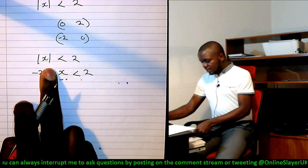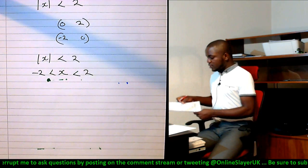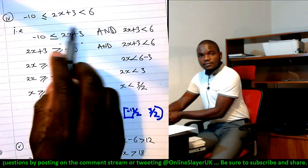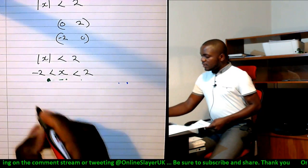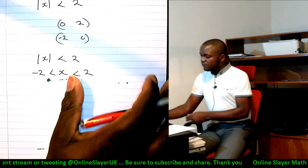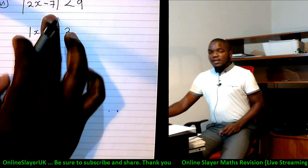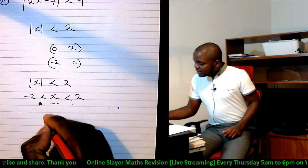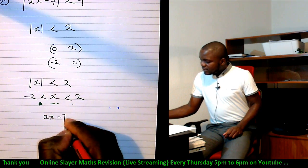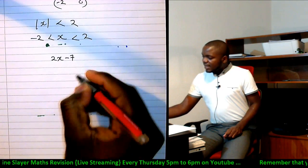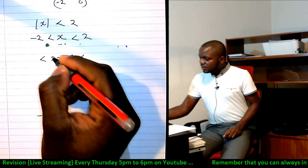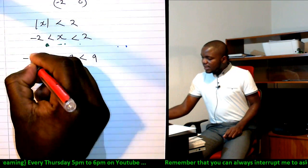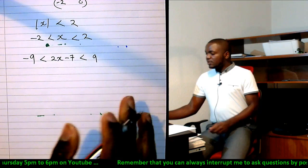So when you see something like this, it should remind you of the question we just solved. Okay, so in this question, you've been told that 2x minus 7 absolute value is less than 9. That's simply telling you that the normal number 2x minus 7 is actually between two numbers: 9 and minus 9.